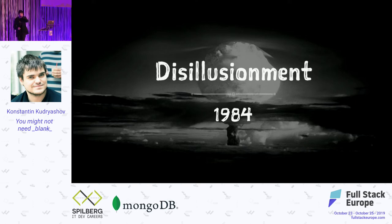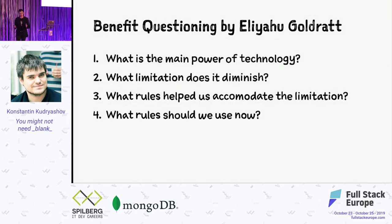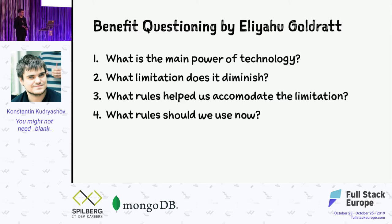As with anything in industry, they moved on to greener pastures, to the new shiny thing, and for decades there wasn't a conclusive answer on what went wrong with MRPs — until the famous Eliyahu Goldratt, of 'The Goal' and the Theory of Constraints fame, came up not only with a plausible answer but also with a framework: a simple series of four questions. What is the main power of the technology? What limitation does this technology diminish when implemented? What rules help us accommodate this existing limitation before we implement it? And what rules should we use now instead?